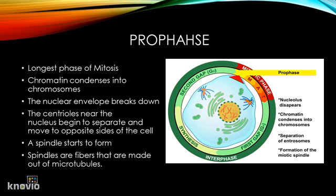Also during prophase, the nuclear envelope breaks down, and the centrioles near the nucleus start to separate and move to opposite sides of the cell. As the centrioles separate, a spindle starts to form between them. Spindles are fibers made out of microtubules.